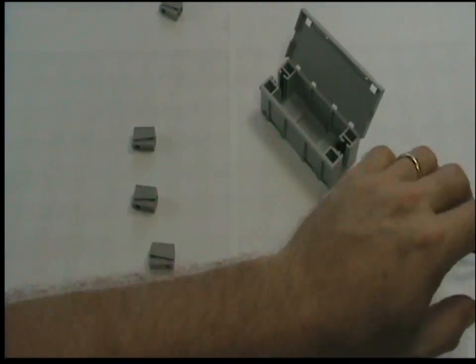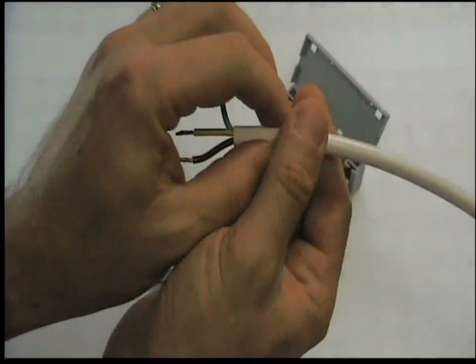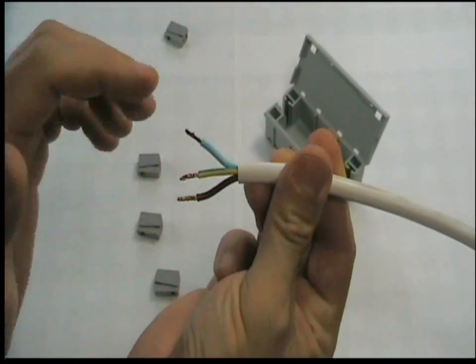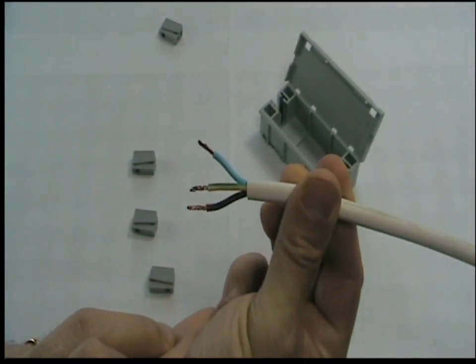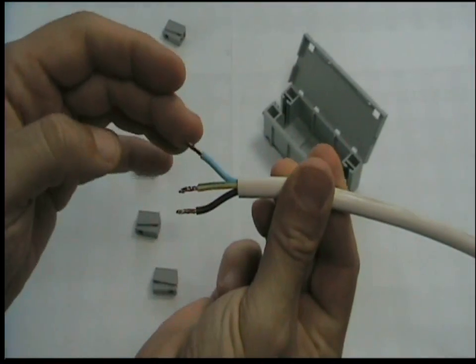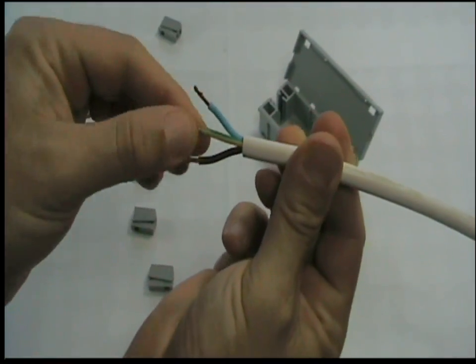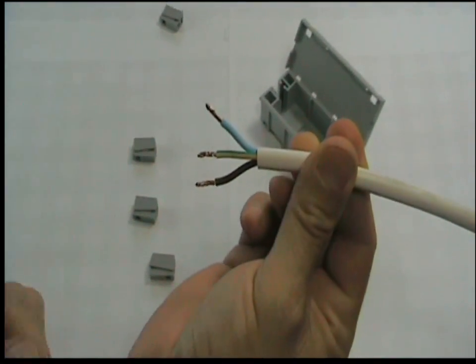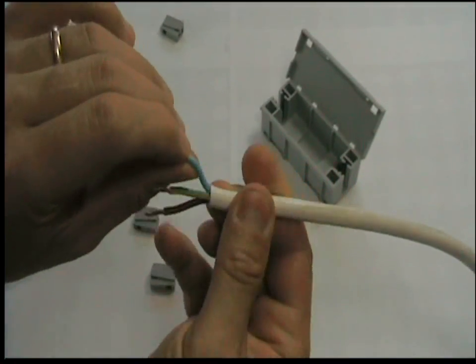To prepare our cables we first need to strip off 35mm of the outer sheath. Then we strip off 10mm of the cable insulation. Once this is done we are ready to connect our WAGO terminals.